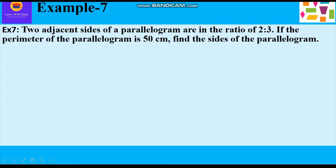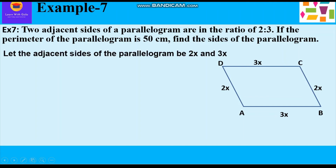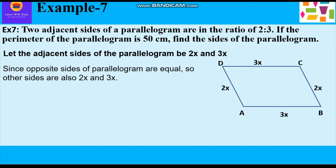Now let us take up example 7. Two adjacent sides of a parallelogram are in the ratio 2:3. If the perimeter of the parallelogram is 50 centimeters, find the sides of the parallelogram. Let us assume the adjacent sides be 2x and 3x. Since opposite sides of the parallelogram are equal, the other two sides will also be 2x and 3x.